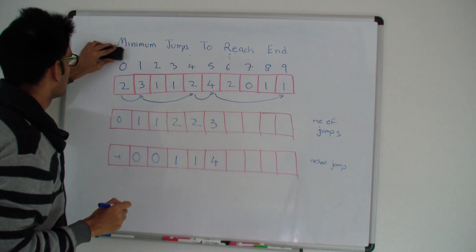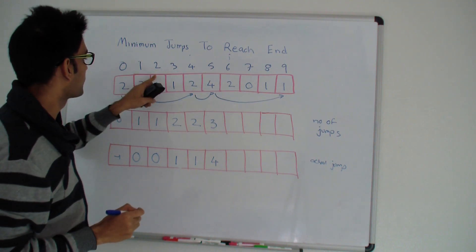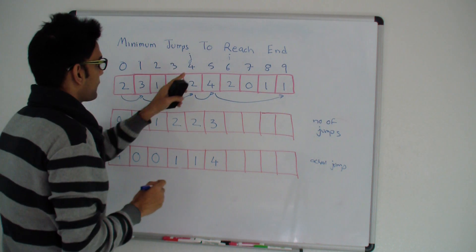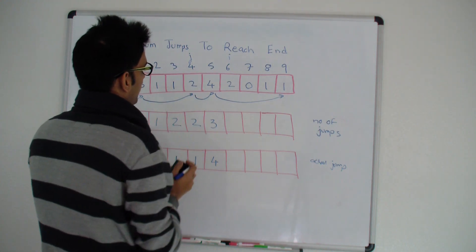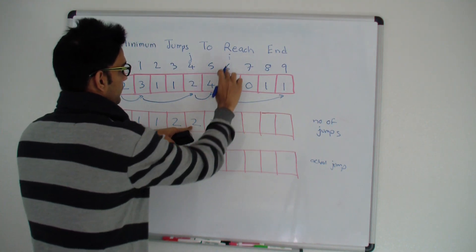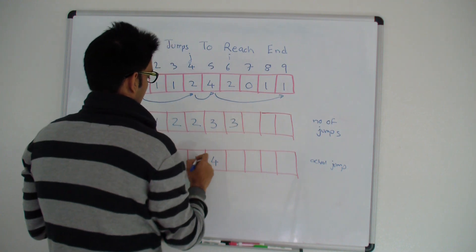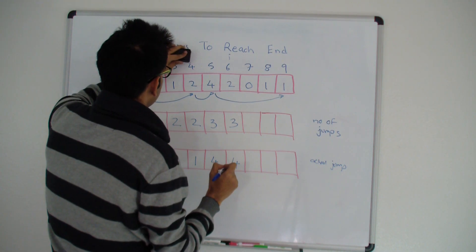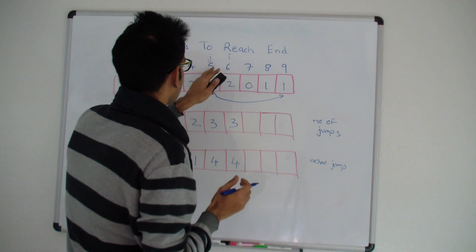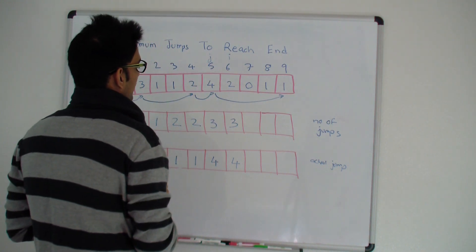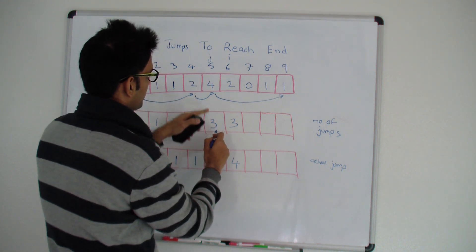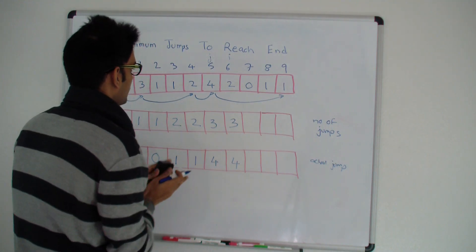For i equals six: can I reach six from zero? No. From one? No. From two? No. From three? No. From four? Yes. So the minimum number of jumps to reach six from four is two plus one, which is three. We indicate reaching six from four. Can I reach six from five? Yes, but the minimum would be three plus one, which is four — not better than three, so we don't touch it.